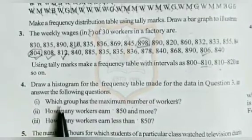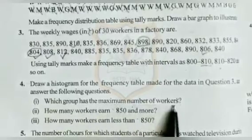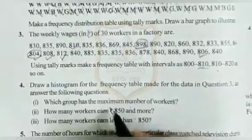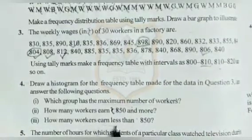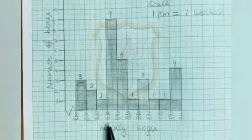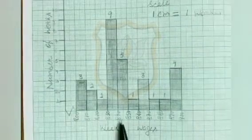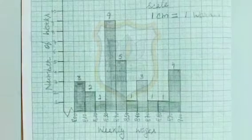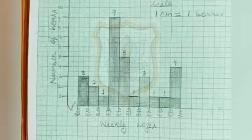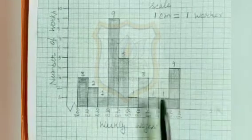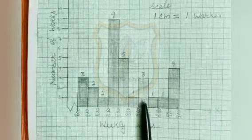Now we will answer the questions. First: which group has the maximum number of workers? The maximum number of workers is 9, so the group 830 to 840 has the maximum number of workers, that is 9. Second: how many workers earn Rs. 850 and more? You can see 1 plus 3 plus 1 plus 1 plus 4 equals 10, so 10 workers earn Rs. 850 or more.